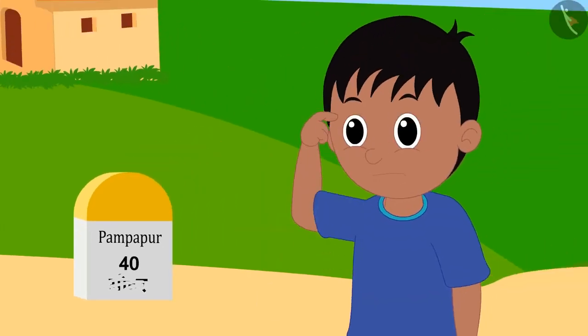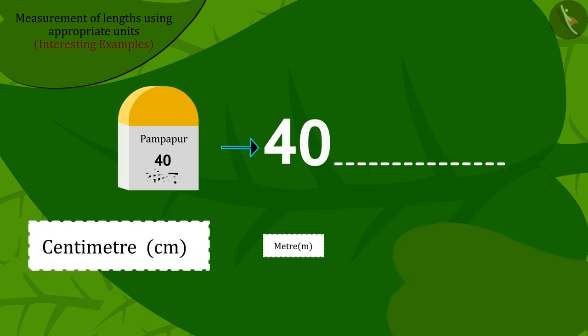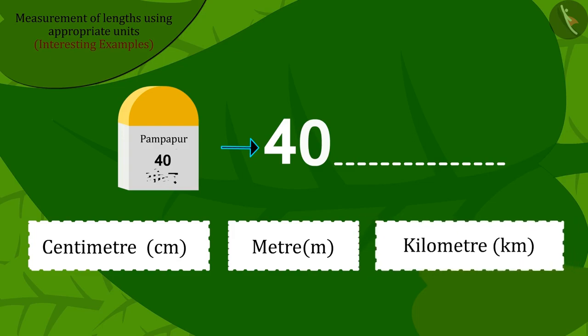Raju started thinking that the distance from Pampapur to there was written on that stone. Now which unit should be written in front of 40 so that the people going there can get the correct idea of distance to Pampapur?